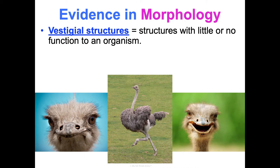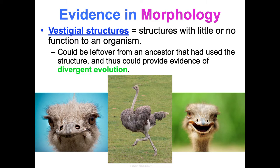Next are vestigial structures. These are structures that some species have that have little or no function, which doesn't make sense from an evolutionary perspective unless they're left over from an ancestor for whom they were useful. They could be evidence of divergent evolution. A great example is ostriches, which have wings but are flightless — completely useless wings.